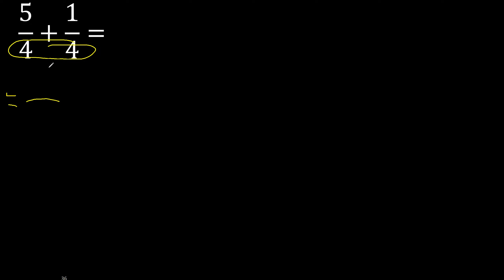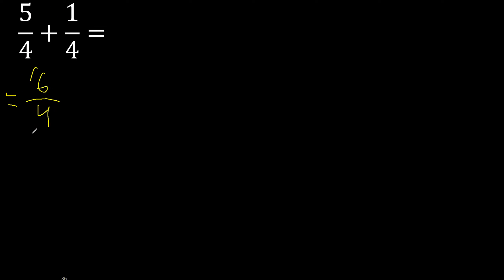Equal number — therefore the same number here. 4 and 5 plus 1 is 6. This can be simplified because it can be divided by the same number. 6 divided by 2 is 3, and 4 divided by 2 is 2, which is greater.